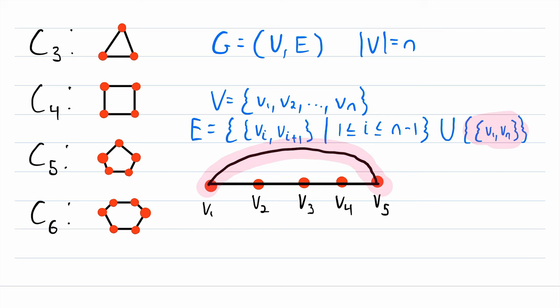So if it helps, you can think of a cycle graph as being a path graph, but with an extra edge added that joins the first vertex to the last vertex, turning that path graph into a cycle graph.